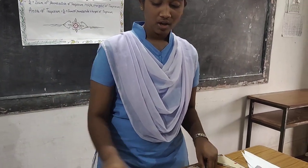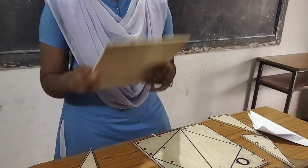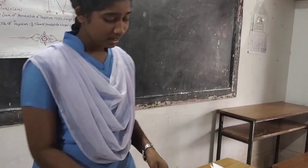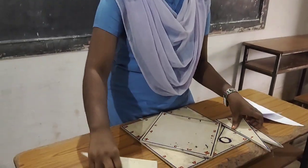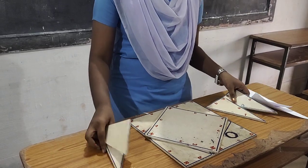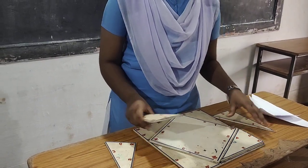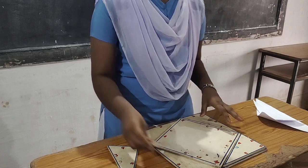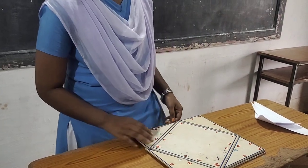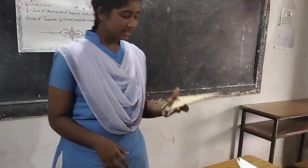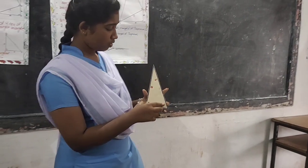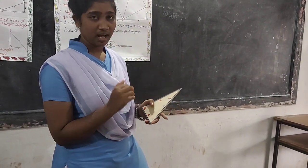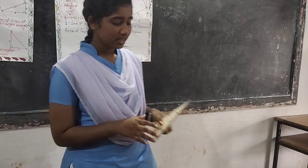I have divided this square into 5 parts: one is the KLMN square and the other four are triangles. Let's arrange this model. You see, here is a triangle whose height is A, base is B, and hypotenuse is C.